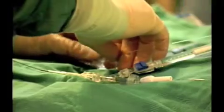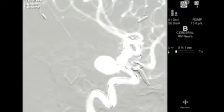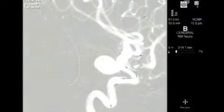The coiling procedure is performed in a state-of-the-art biplanar angiosuite. The microcatheter tip is delivered into the aneurysm.